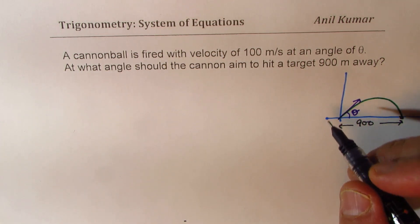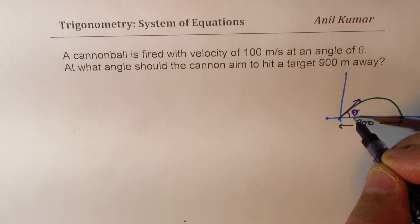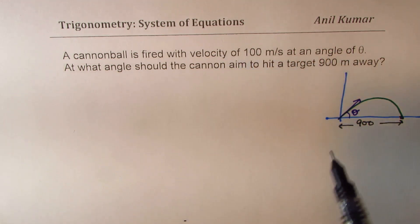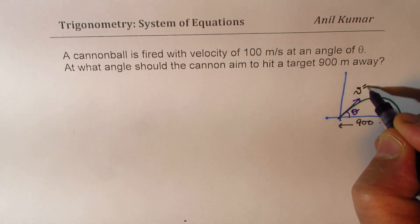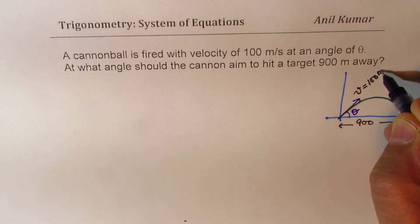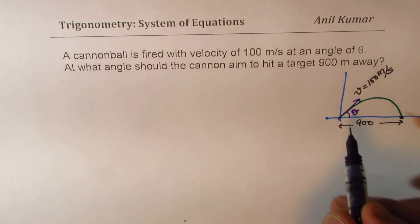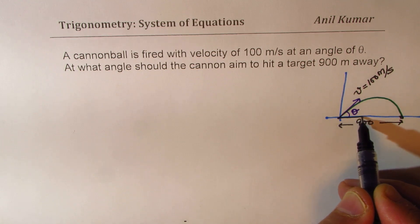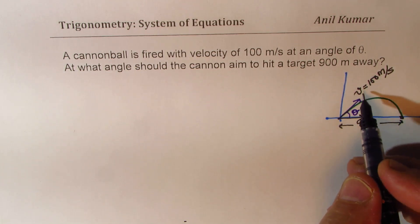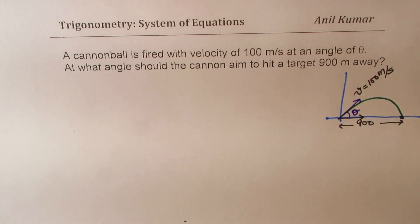So let us say that this angle is theta and we know that the velocity, we will call this as V, which is 100 meters per second. So in that case, the horizontal component of this velocity is going to be V cos theta, right?